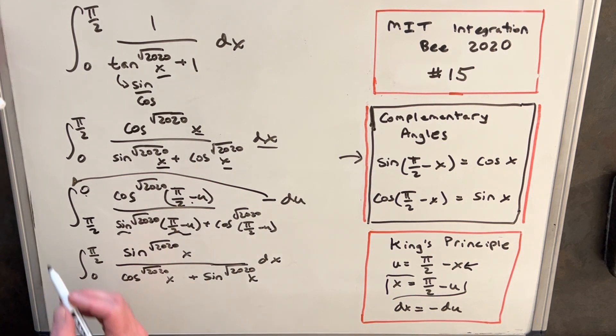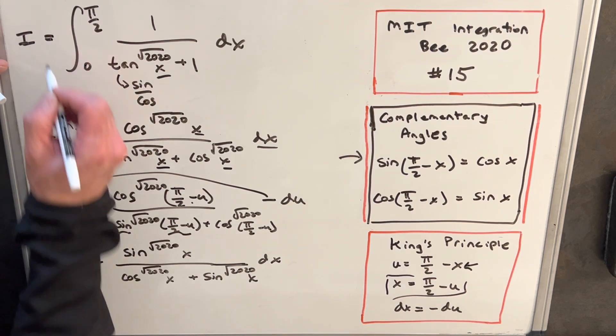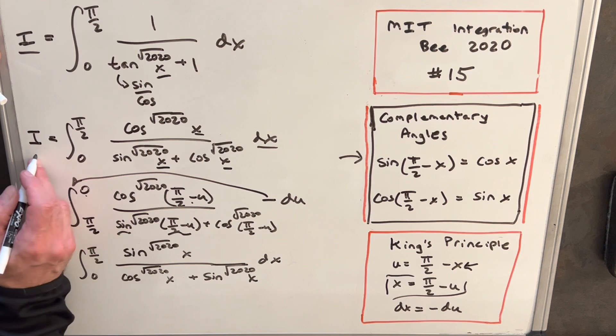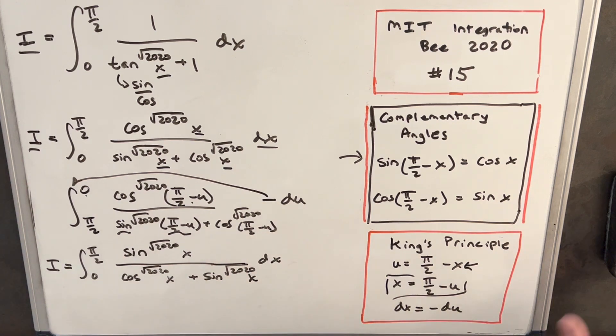And then from here, what we can do is we can kind of just label this was our original integral, and we're going to call that i. But this is the same thing here, and this is the same thing here. So we can now clean up the board and then we can add two copies of these together and see what happens.